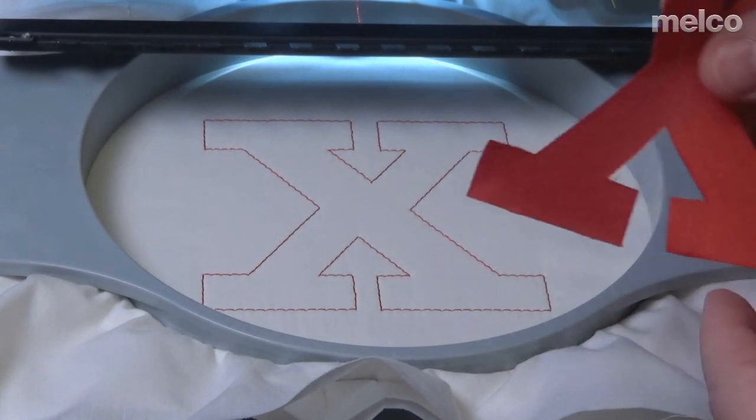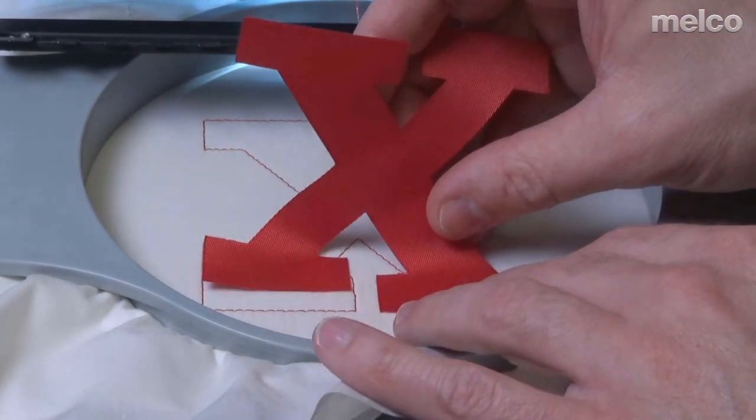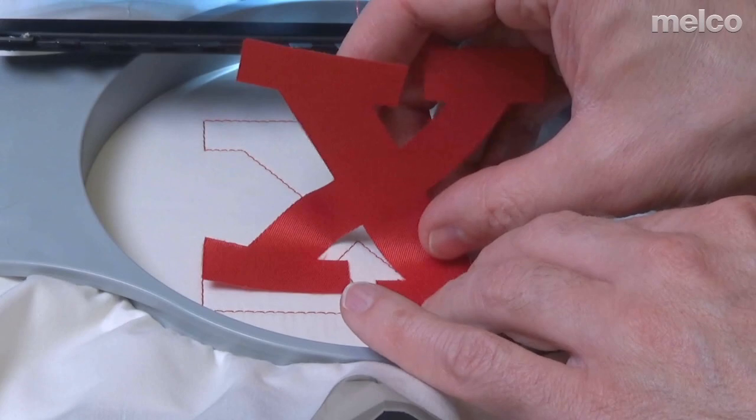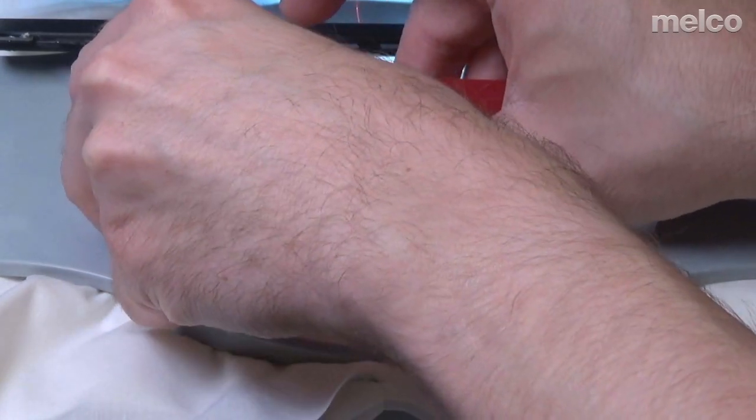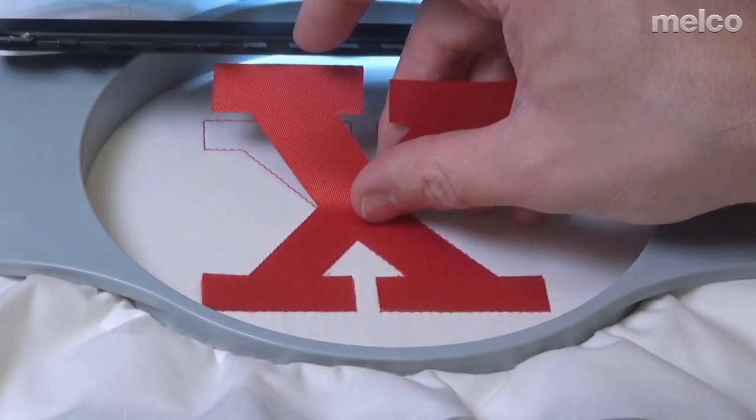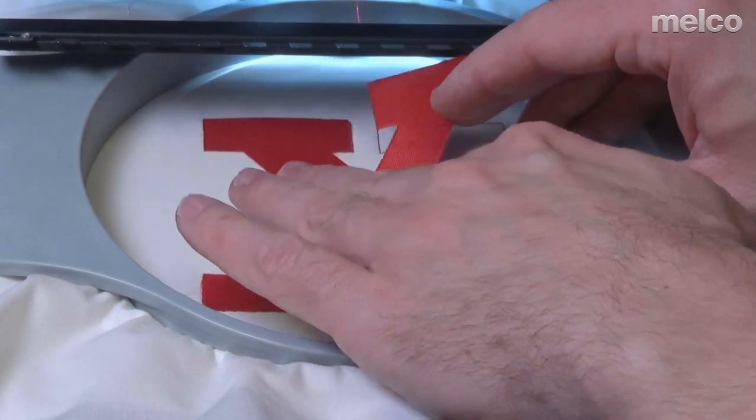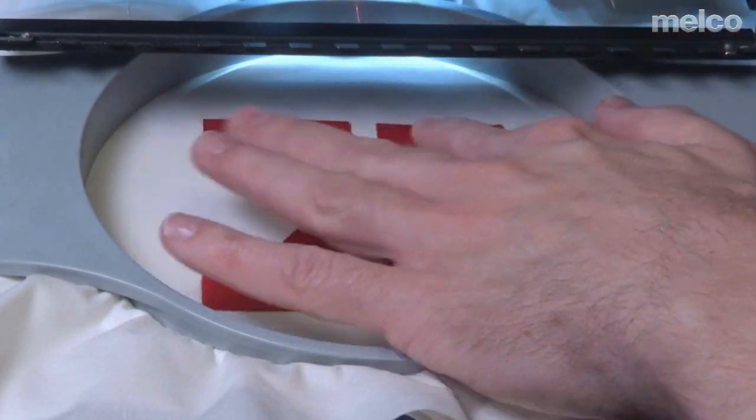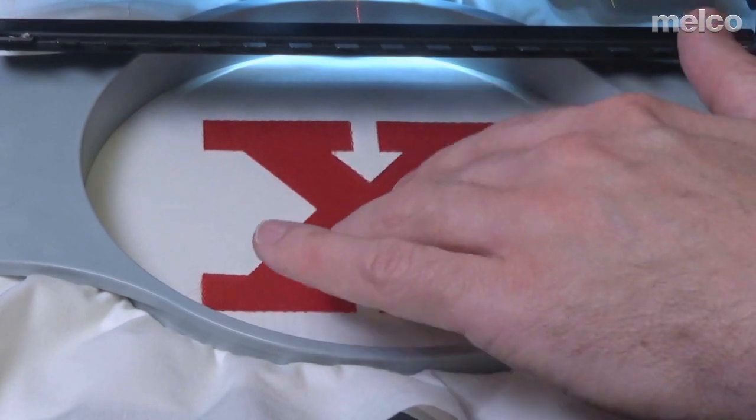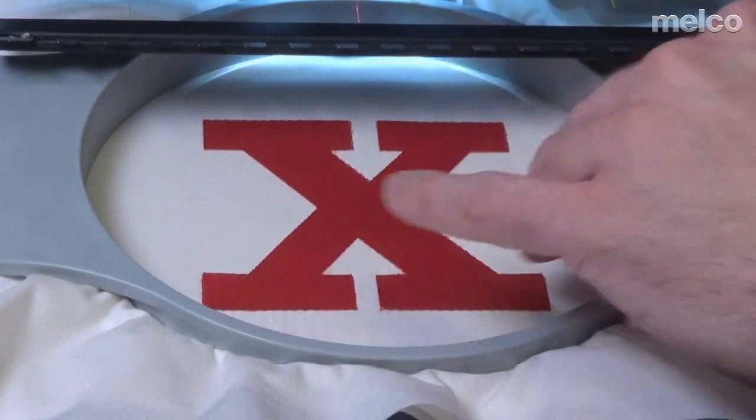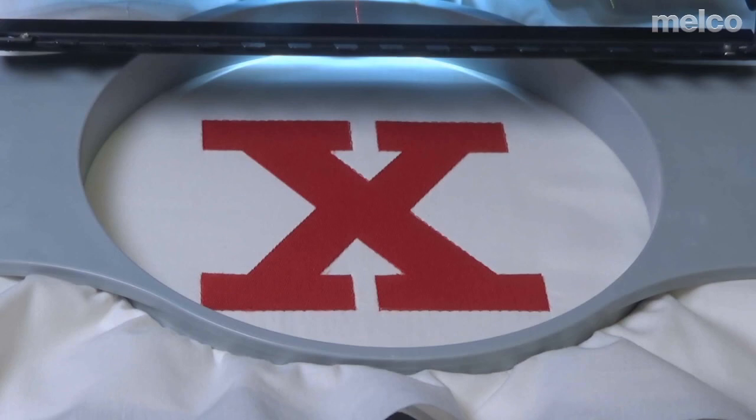So now I'm going to lay that down, just lining it up as best I can. The nice thing about using that locator stitch with that cutter is that everything lines up perfectly. So I'm just going to slide that into place, give it a slight rub just to make sure that pressure sensitive adhesive is holding it well, and then I'm going to press the green button, and it will sew the tack down stitch.